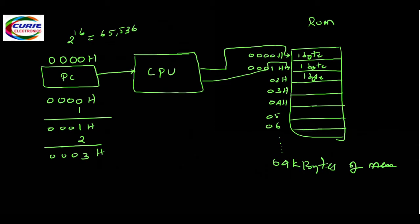So, the program counter is a register which holds the address of the instruction to be fetched from the memory. That is what the program counter does.